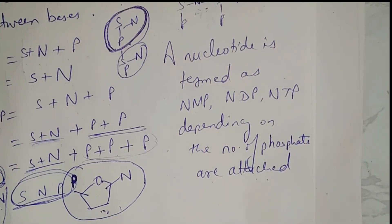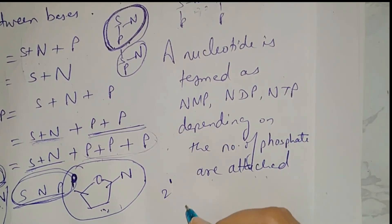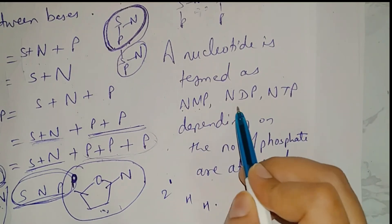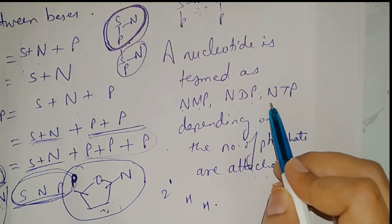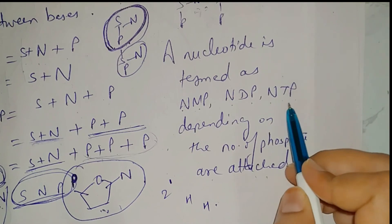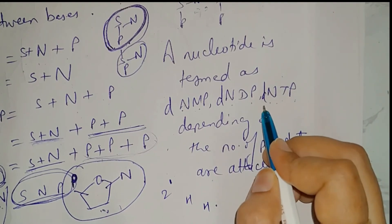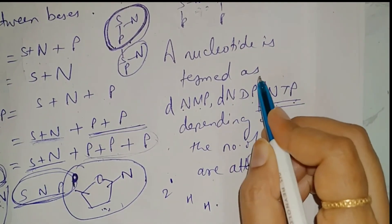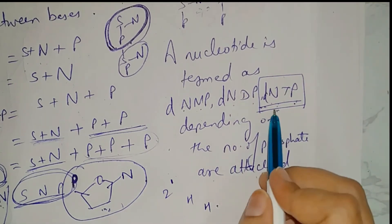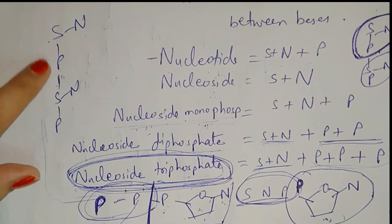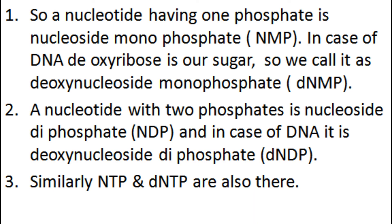In DNA, the sugars at the 2 prime carbon have only H, so we call them deoxyribonucleoside monophosphate (DNMP), deoxyribonucleoside diphosphate (DNDP), and deoxyribonucleoside triphosphate (DNTP). Deoxyribonucleoside triphosphates are our raw materials, which are converted into DNMP and added to one another to form a long DNA molecule. With this we come to the end of this video. In our next lecture we will talk about phosphodiester bond and glycosidic bond. Thank you for watching.